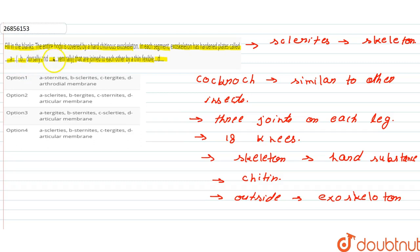The sclerites that are dorsally positioned are called tergites. The sclerites that are ventrally positioned are called sternites. These tergites and sternites are joined to each other by a